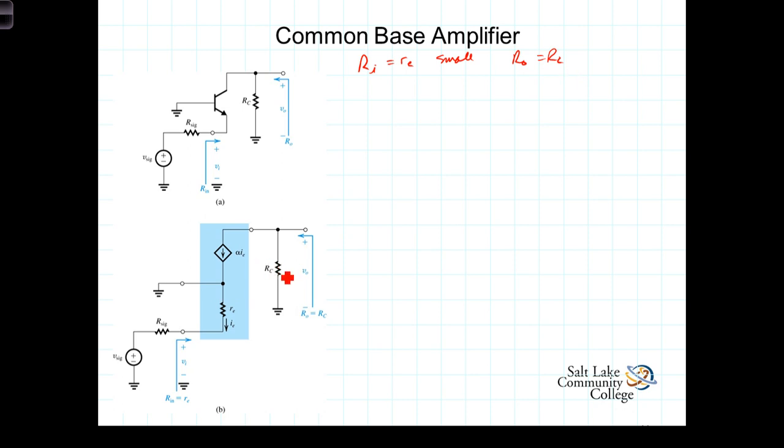So to get much gain, we'd like R-sub-C to be large, but we'd also like R-out to be small. So there's a trade-off there. Really, this amplifier has just the opposite input-output resistance characteristics to what we'd like. It's got a small input resistance and a relatively large output resistance.